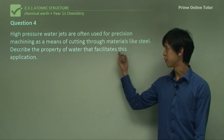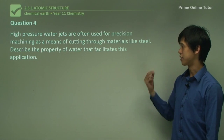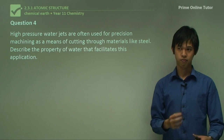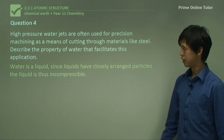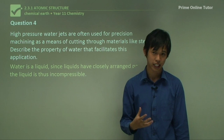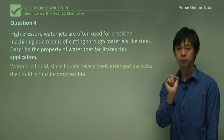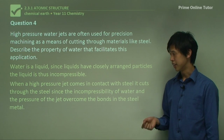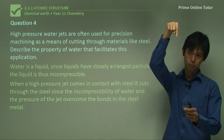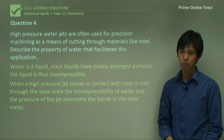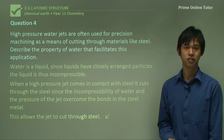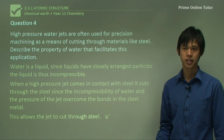High pressure water jets are often used for precision machining as a means of cutting through materials like steel. Water is a liquid, and since liquids have closely arranged particles, the liquid is essentially incompressible — there is a slight amount of compressibility, but it's very, very small. When a high pressure jet comes into contact with steel, it cuts through the steel since the incompressibility of the water and the pressure of the jet overcome the bonds in the steel. The pressure of the jet forces the water through the steel and cuts through it — a very impressive use of water.